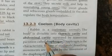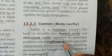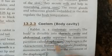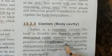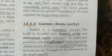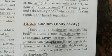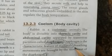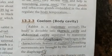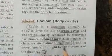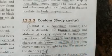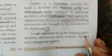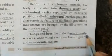The diaphragm is the characteristic feature of mammals. Breathing movements are brought about by the diaphragm. The lungs and the heart lie in the thoracic cavity.